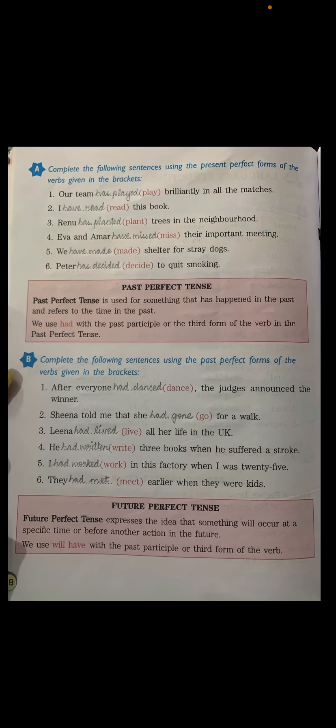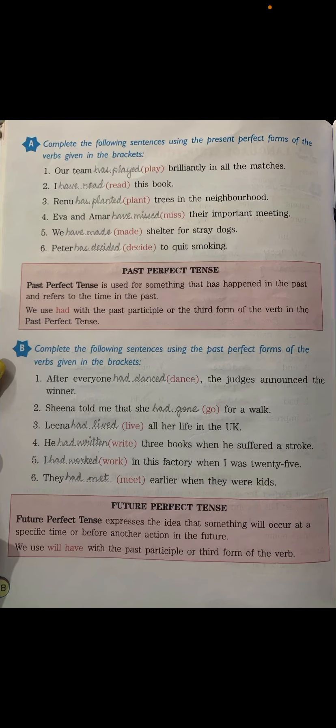Now, Future Perfect Tense. Future Perfect Tense expresses the idea that something will occur at a specific time or before another action in the future. We use 'will have' with the past participle or third form of the verb in Future Perfect Tense.